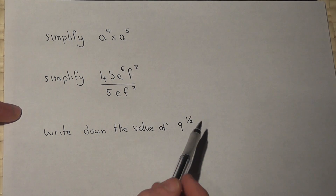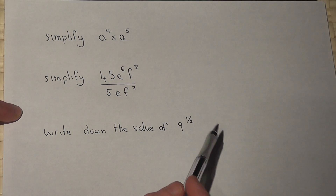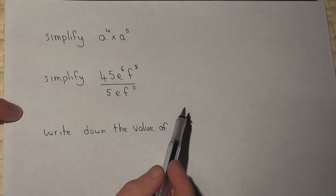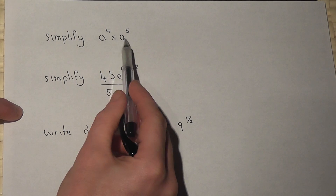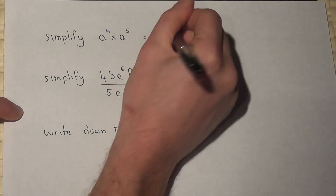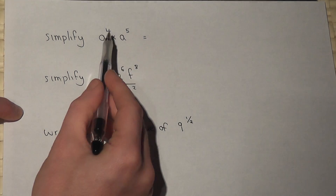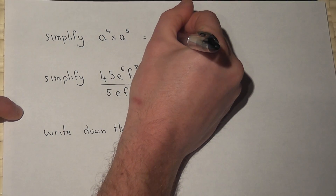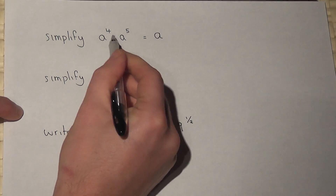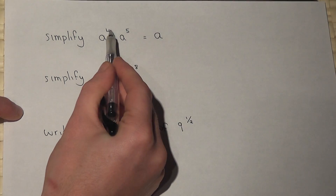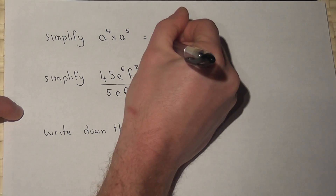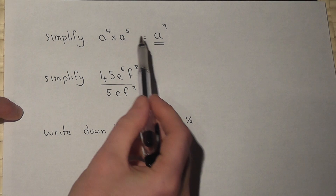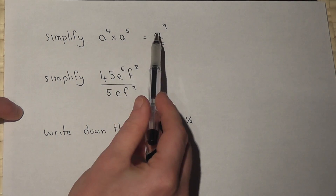This video reviews three examples of powers or indices. In the first example, we're asked to simplify a to the power of 4 times a to the power of 5. The golden rule when multiplying expressions like this is to add the powers, so this becomes a to the power of 4 plus 5, which is 9. The answer is a to the power of 9.